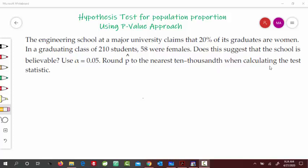First let's extract the information from here. This is p0, and n is 210, and this 58 is x-value. From here we can compute p hat.